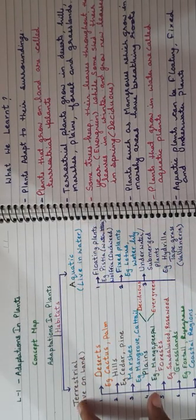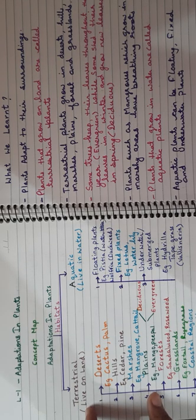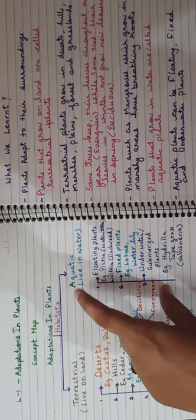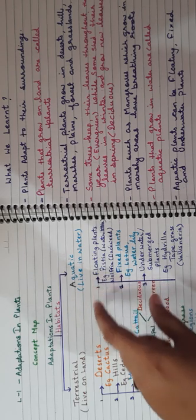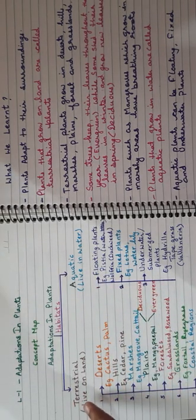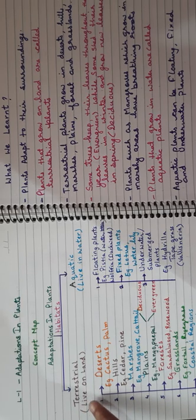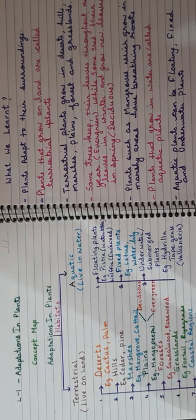One is terrestrial — terrestrial means plants that live on land. The other is aquatic — plants that live in water. According to that, the terrestrial plants are divided into seven categories.